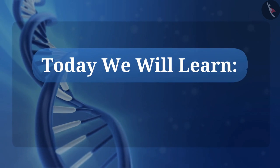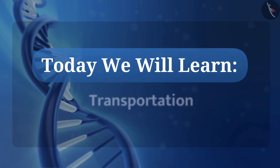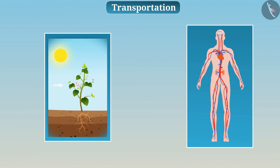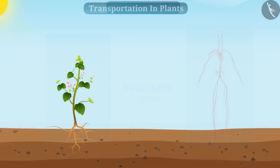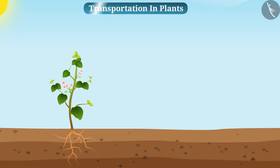Today we will learn about transportation. The process of transportation of various substances in the body of an organism is accomplished by the transportation system. Let us first talk about transportation in plants.